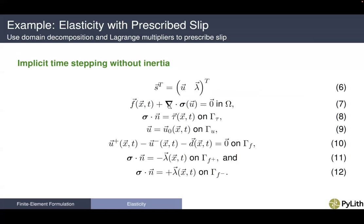We have the normal tractions on the boundaries, displacement boundary conditions on other boundaries, and then we enforce fault slip across the fault surface. We have the jump in displacement — displacement on the positive side minus the displacement on the negative side — equal to the specified slip. On that fault interface, the change in tractions equals minus the Lagrange multiplier on the positive side of the fault face, and positive Lagrange multiplier on the negative side. This is a domain decomposition approach to introducing dislocations into our mesh, covered extensively in our 2013 JGR paper.